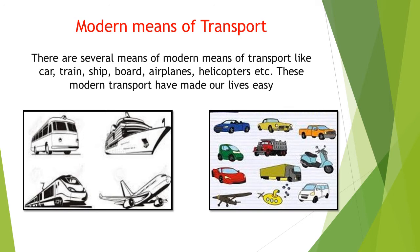These modern means of transport have made our lives easy. As you can see in the image, there are two types of modern transportation. The first one is about air and water transport, and the second one is about road transport. Air and water transport consist of airplanes and ships, and road transport consists of motorcycle, car, buses, vans, scooter, and train.